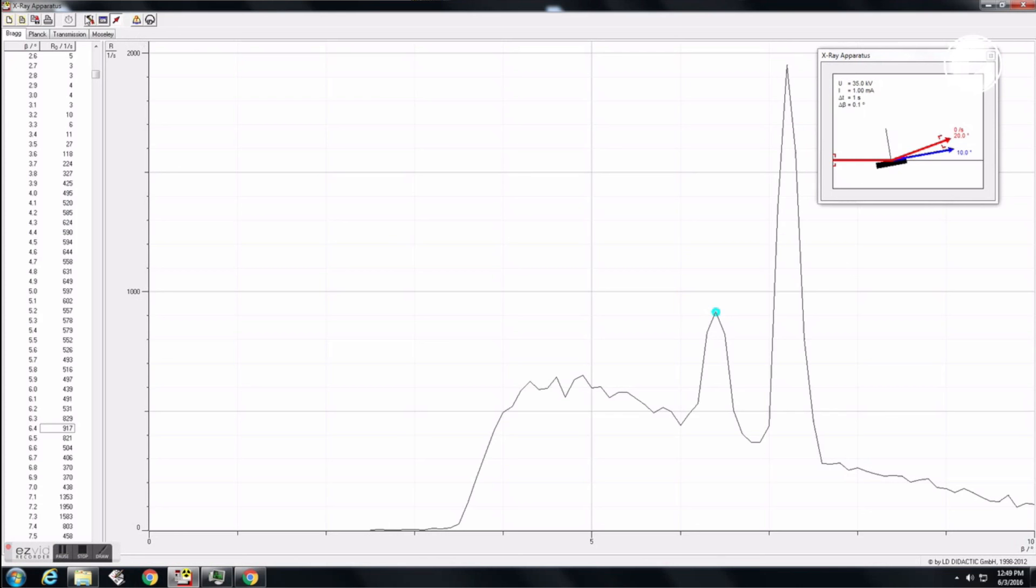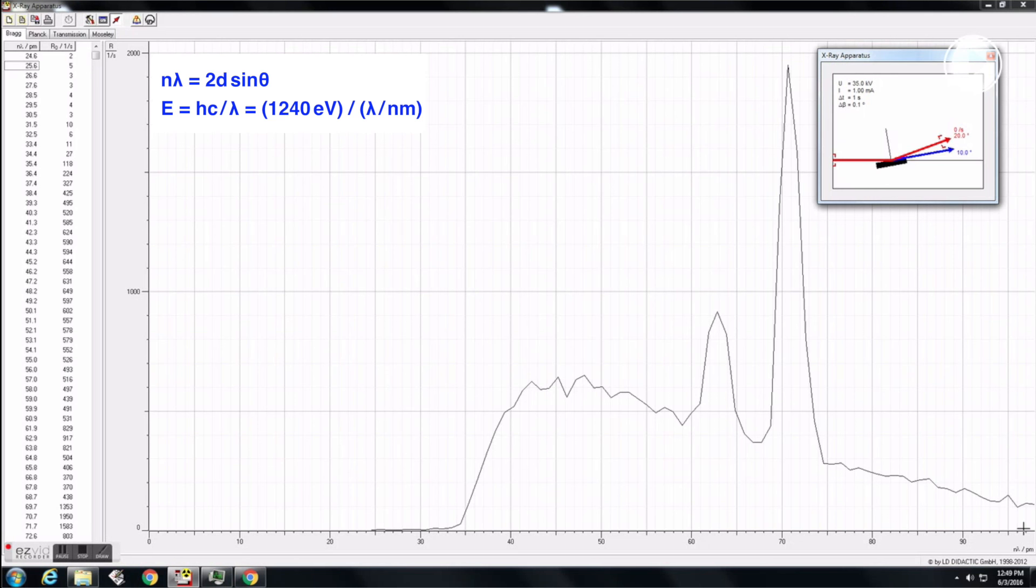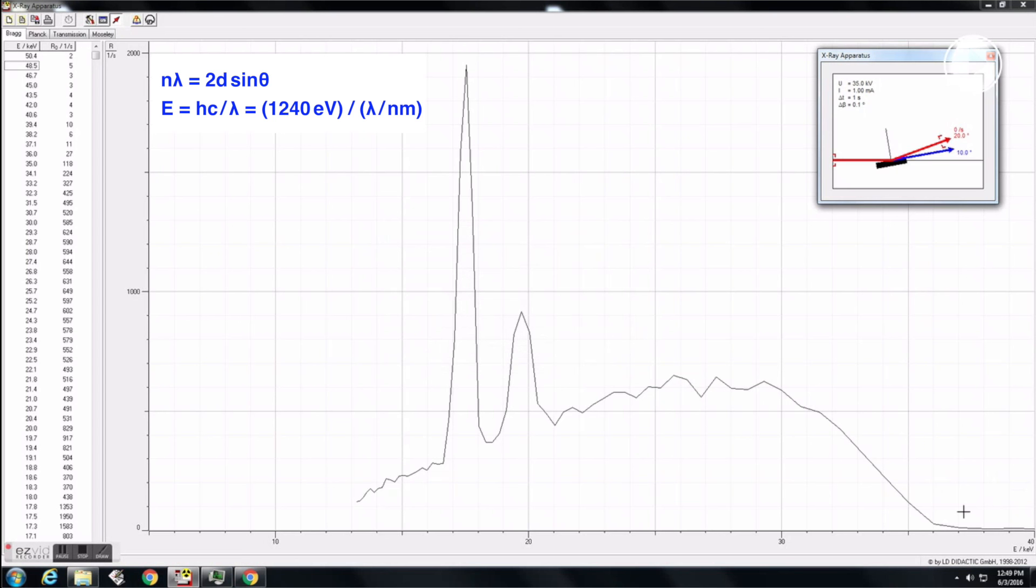Scan data should show up on the X-ray apparatus graphics display. To show the wavelength spectrum, open the settings box by clicking on the toolkit icon. Then select the correct lattice constant for the crystal. To show the energy spectrum, simply select molybdenum anode from the energy conversion drop down menu. The conversion between the angle and the wavelength, and the conversion between the wavelength and the energy, are shown on the top left of the graph.